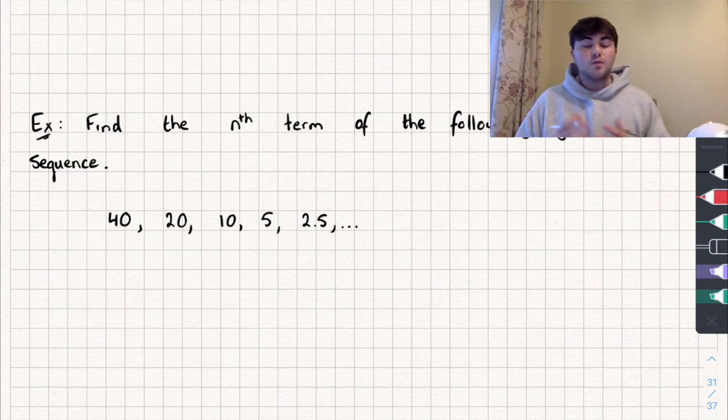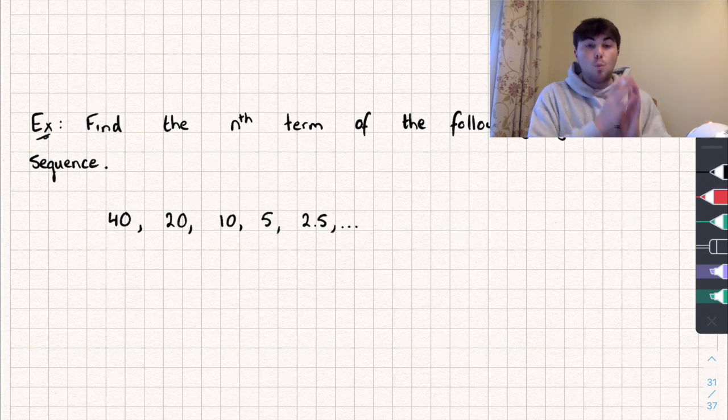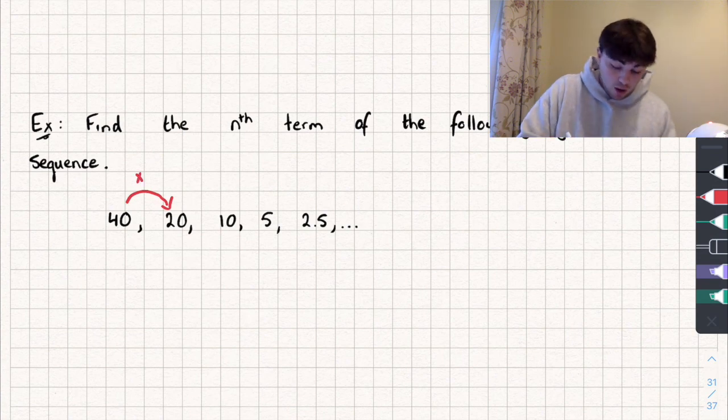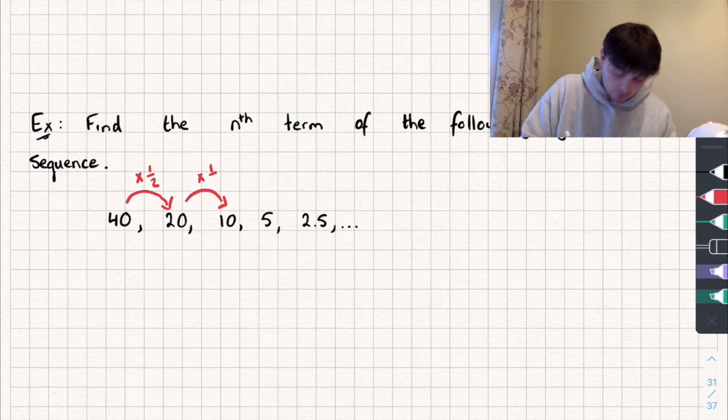So the first step I'm going to do is find what is my common ratio. How do I get from one term to the next? So we're going from 40 to 20. Well, what do I multiply by? I could multiply by 1 half like this. How do I get from 20 to 10? Multiply by half. And so we found our common ratio is going to be equal to 1 half.